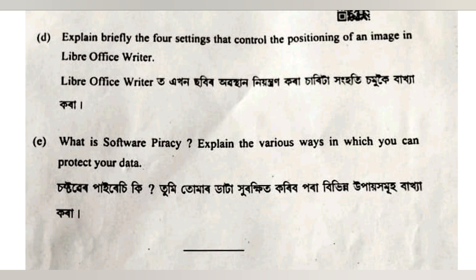Explain various ways in which you can protect your data. For idea or intellectual property protection, we need to use copyright, trademark, and patent. But according to data protection specifically, we need to use password and encryption. This is the data protection process.